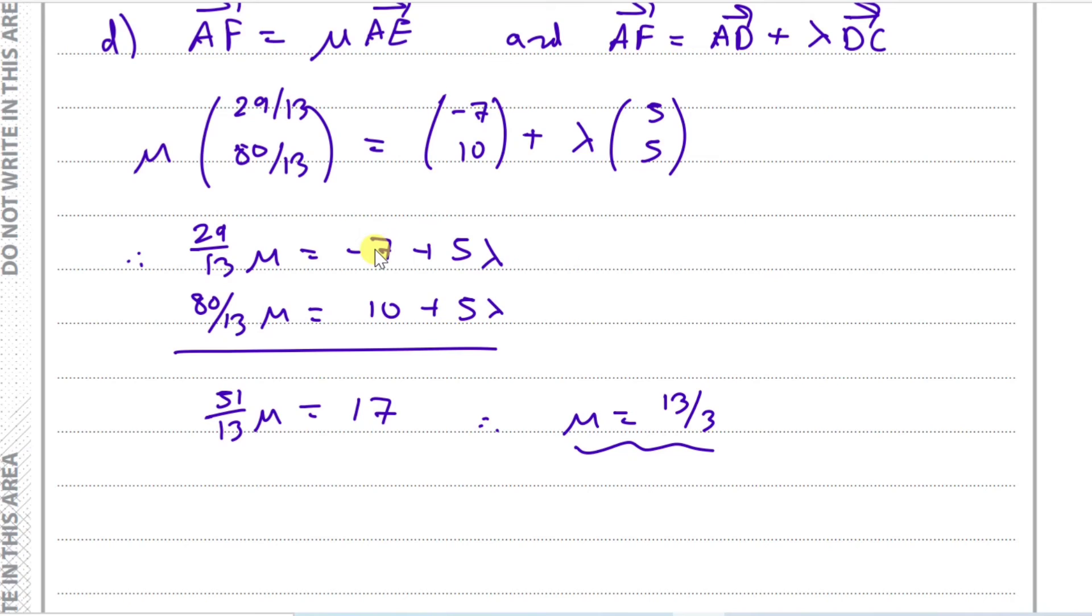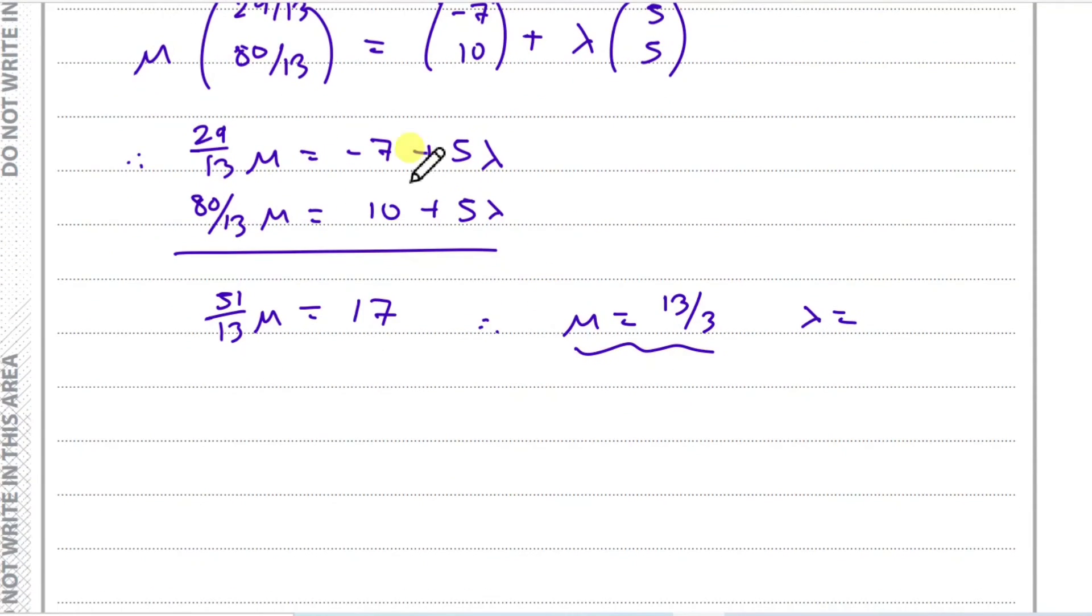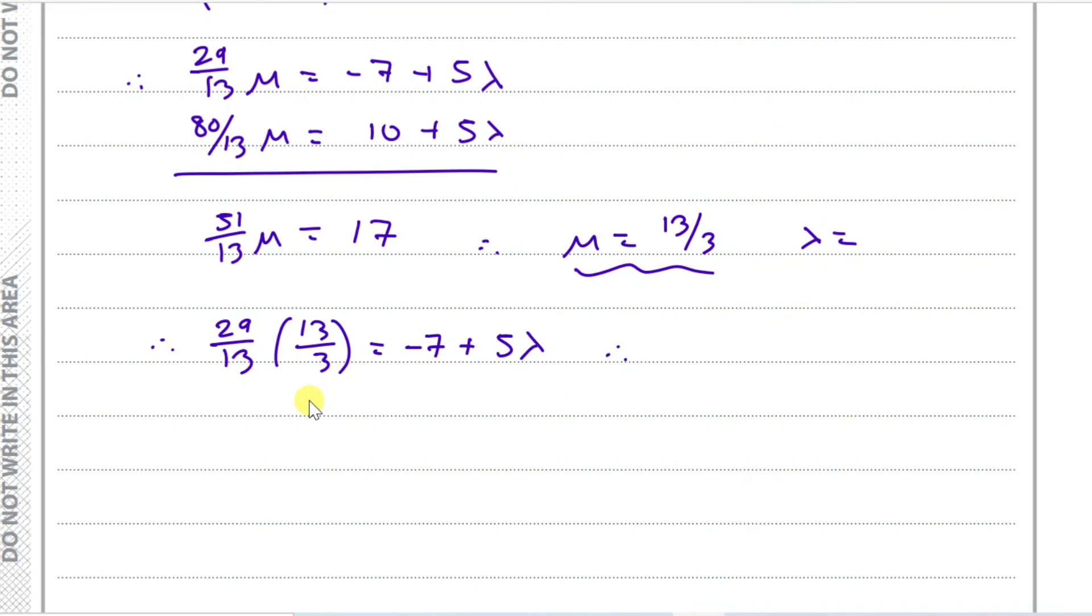And then we can work out lambda too. So I'm going to just use the first equation. So we're going to have 29 over 13 times our mu value equals minus 7 plus 5 lambda. And making lambda the subject, we should get lambda equals all of that 29 thirteenths times 13 over 3 plus 7 all of that over 5. So lambda should get you 10 over 3. So that's our answer.